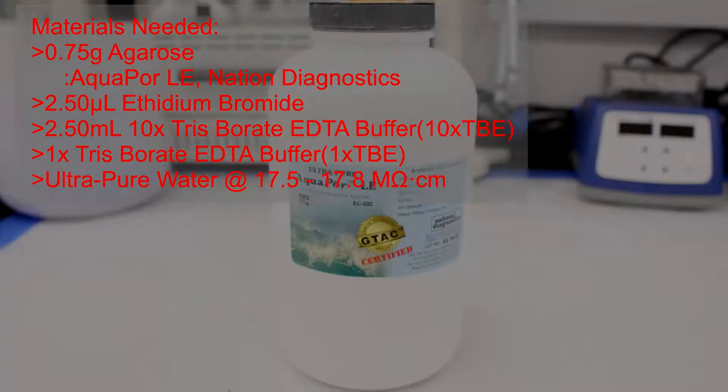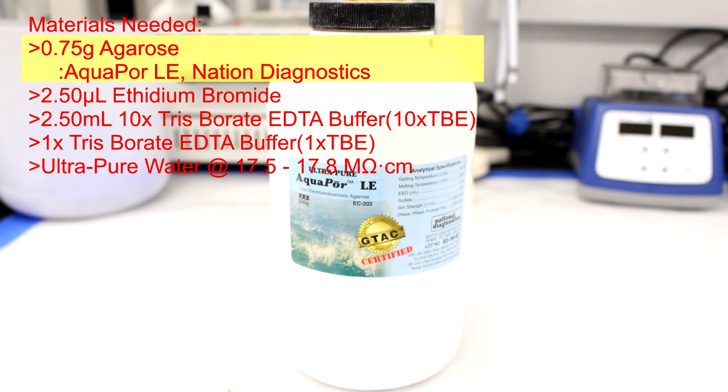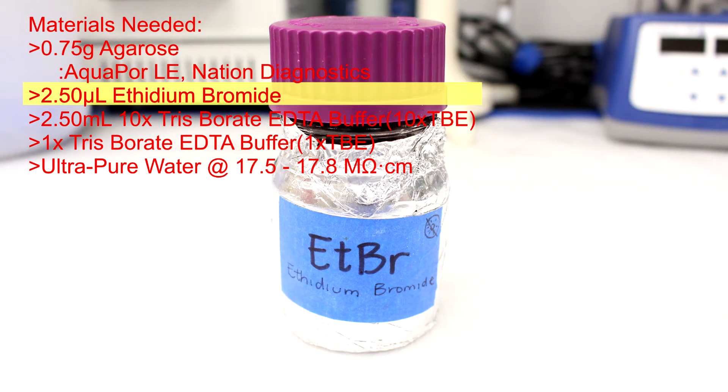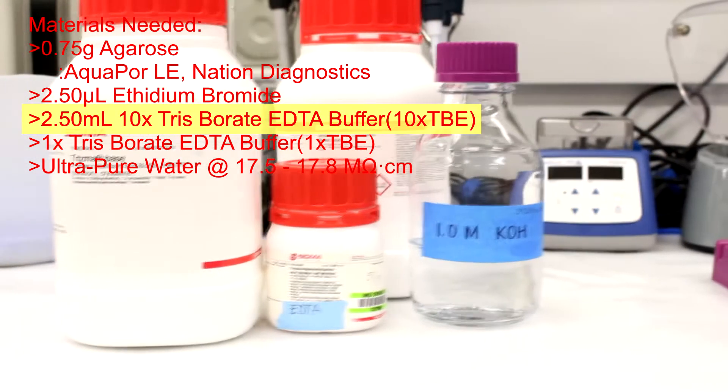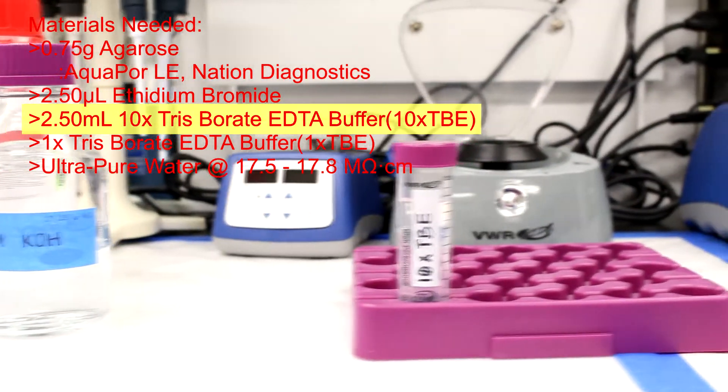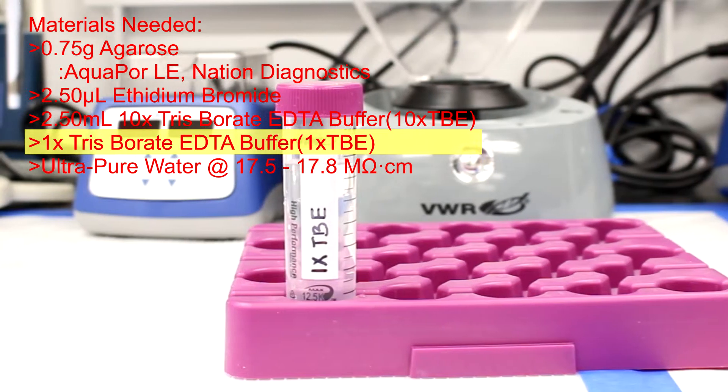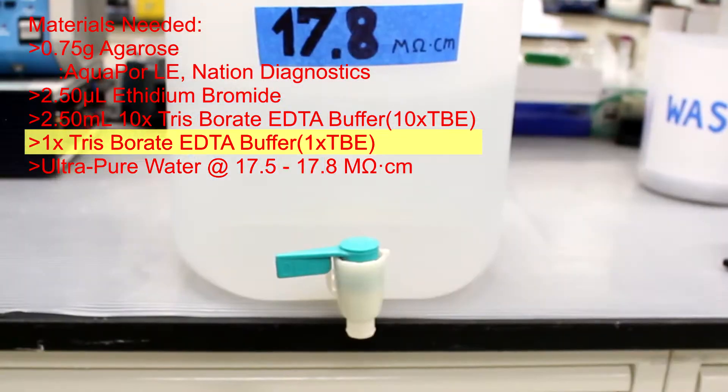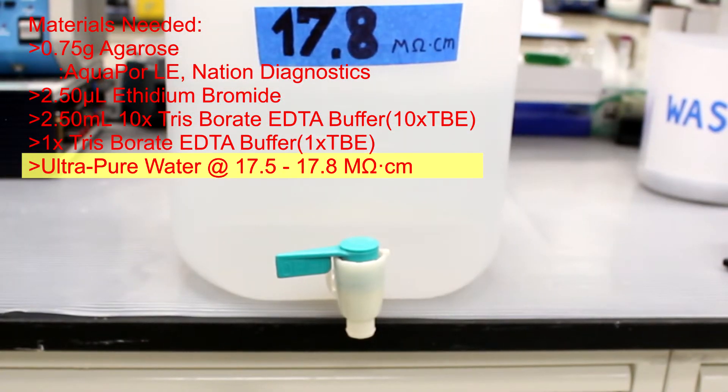This procedure will require 0.75 grams of agarose, 2.5 milliliters of ethidium bromide, Trisborate EDTA buffer, also known as TBE, a 1x TBE buffer solution, and ultra-pure water. The water we'll be using is between 17.5 and 17.8 mega-ohm centimeters.